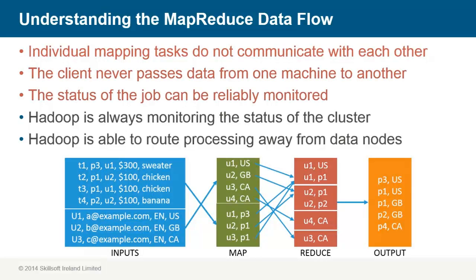All data movement is handled by the Hadoop framework through the job tracker on the name node. In this way, since Hadoop takes control of the entire process, the status of the job can be readily monitored. Hadoop is always monitoring the status of the cluster as it relates to running MapReduce jobs. Thus, it is able to route processing away from data nodes that have either become unreachable or troublesome.